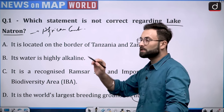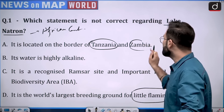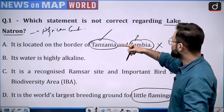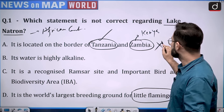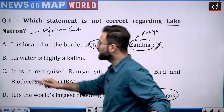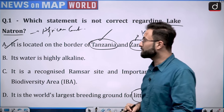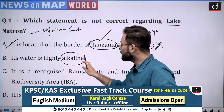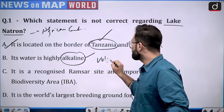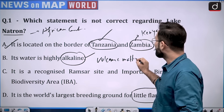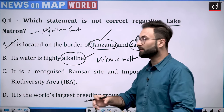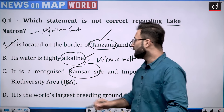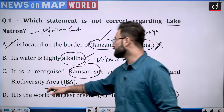Coming to statement one — it says it is located on the border of Tanzania and Zambia. That is an incorrect statement, because it is in Tanzania and on the border of Tanzania and Kenya, not Zambia. So option A is your right answer. Statement two — its water is highly alkaline — that is true because of the volcanic matter. There are various volcanoes in the vicinity and this volcanic matter joins the water, which is why it is alkaline. Statement three — it is recognized as a Ramsar site and an important bird and biodiversity area — that is also true.